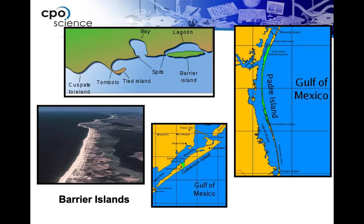Barrier islands often have a lagoon or bay behind them. In real life, many communities are built on them. We have a lot of barrier islands on the Atlantic coast — the Pacific coast is too rocky, but the Atlantic side is very sandy. Examples include Padre Island in Texas and Galveston Island. These communities are accessible by a bridge. Barrier islands are found everywhere: North Carolina, Florida, and throughout the Atlantic coast.